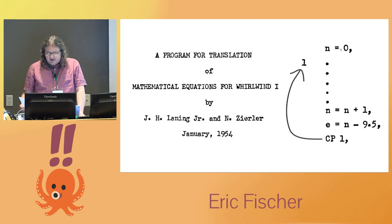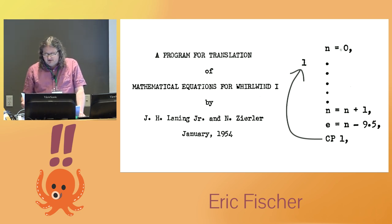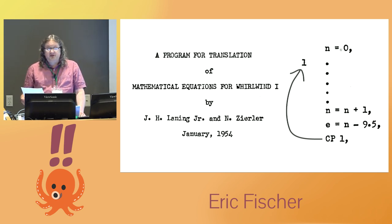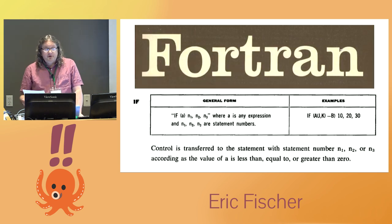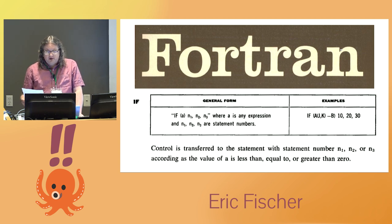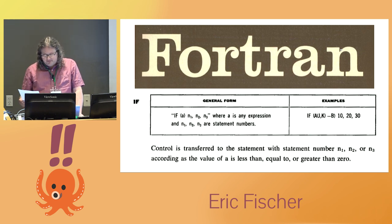This idea was carried forward into the first higher-level programming languages, like Halcom Lanning and Neil Zerler's language for Whirlwind. Their conditional jump instruction worked the same way, except that the number of steps of the program were algebraic expressions, not single machine instructions. The first really popular programming language, Fortran, generalized this idea by specifying jumps to three locations at once depending on whether a calculation was negative, zero, or positive, and gave it the name if.